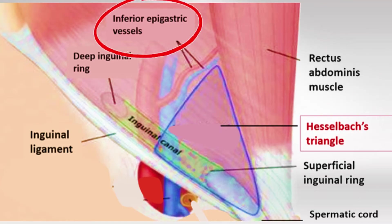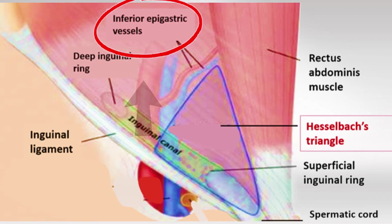The inferior epigastric artery is also a differentiating feature between direct and indirect inguinal hernia. If the hernia is on the medial side of the artery it has to be inside the triangle, so it's direct, and if it's on the lateral side it'll be indirect.